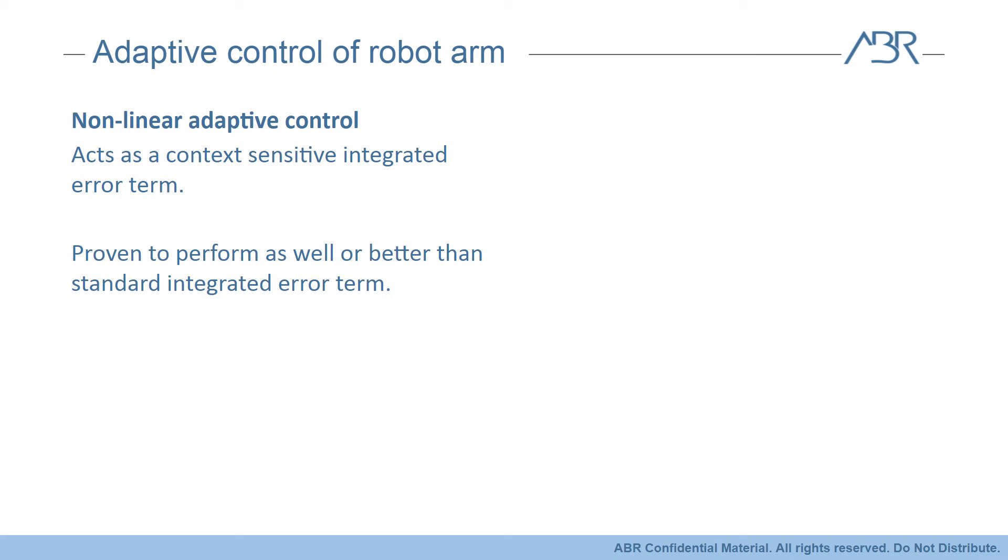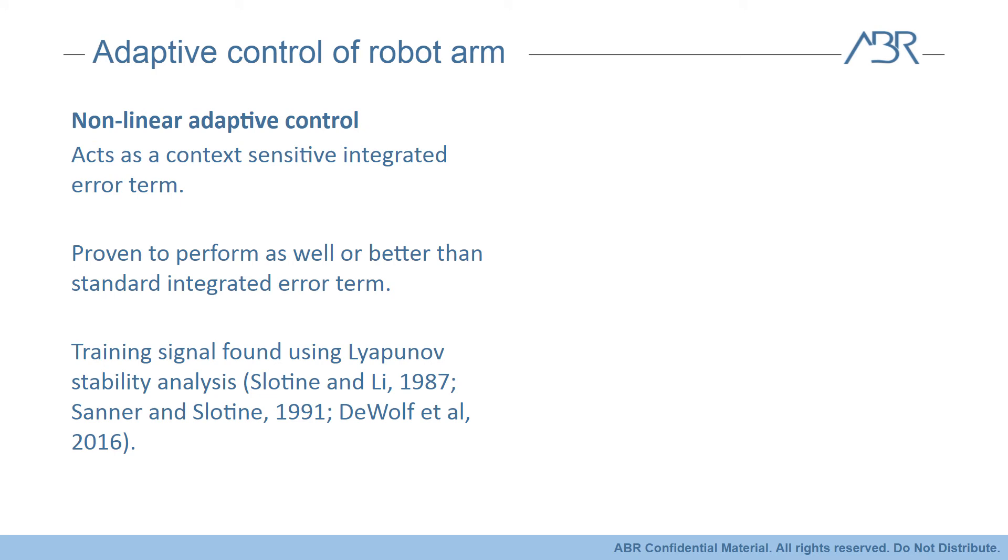One of the really nice features of the nonlinear adaptive control is that it's guaranteed to perform at least as well as a standard integrated error term. There are a few stipulations about the number of neurons and the shape of the response curves and noise, but in general we can be confident that implementing this adaptive control will improve the performance of our system. Another nice feature is that the training signal we're using is the same sliding control signal that we were already calculating. Details about the derivation and the stability of this can be found in a few places. The original 1987 paper works through learning the coefficients when you explicitly know equations of motion for the system. The 1991 paper extends this to learning weights for Gaussian basis functions, and then in my thesis and 2016 paper we further extend it to run with spiking neurons, by taking advantage of the methods of the NEF and the prescribed error sensitivity learning rule.